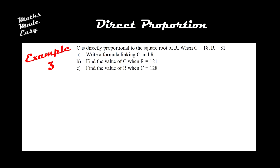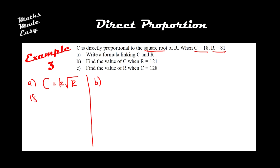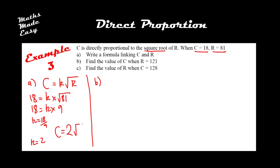Here's a third example. C is directly proportional to the square root of R — a slightly different formula. Write C equals K times square root of R. Substitute in C as 18 and R as 81: 18 equals K times square root of 81, which is 9. So K equals 18 divided by 9, giving K equals 2. The formula is C equals 2 times the square root of R.